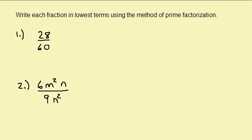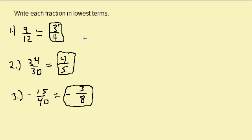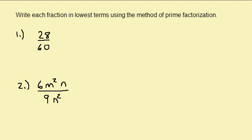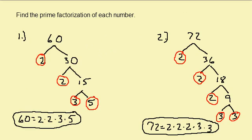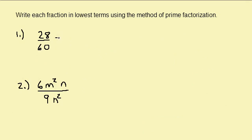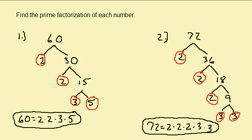Now let's use the method of prime factorization to reduce each fraction. Sometimes we can't find the largest number that divides into each one evenly. If we can't find that largest number, we can break each of these up into a product of prime numbers, just like we did here. So let's rewrite 28 and 60 as a product of prime numbers.